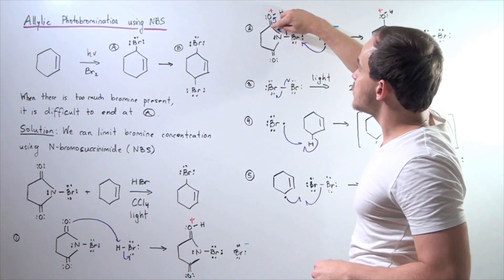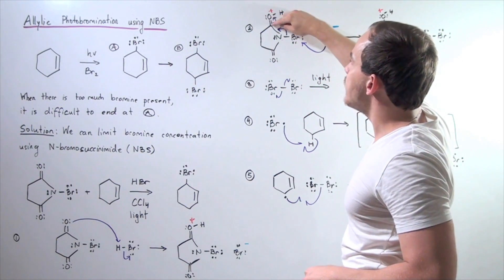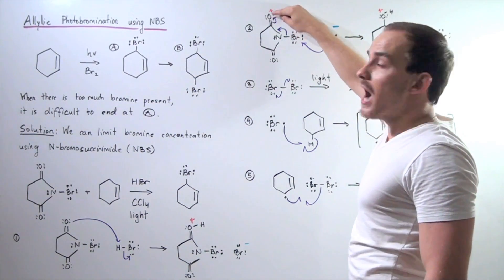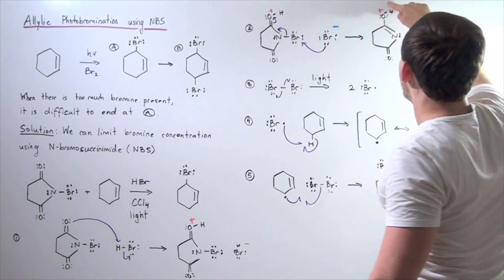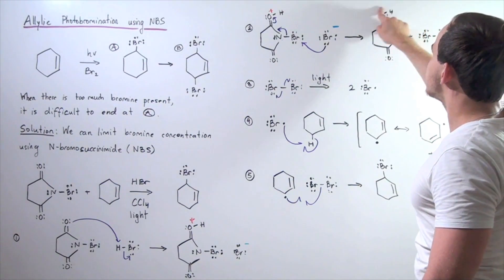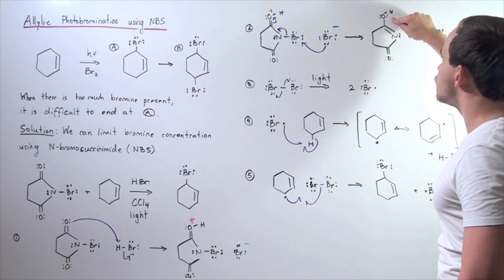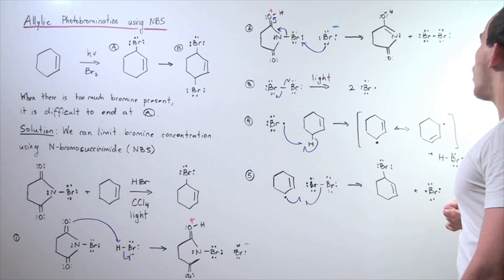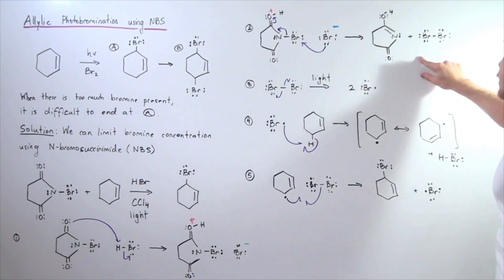And also this carbon-O bond, the pi bond, breaks off and the lone pair of electrons goes on this oxygen. And now, we have a double bond between N and carbon, and we form the following diatomic Br2. So we have our bromine.